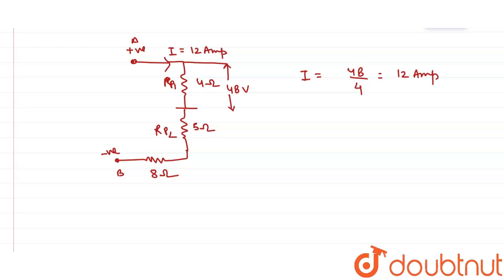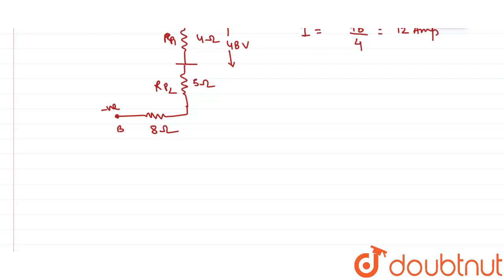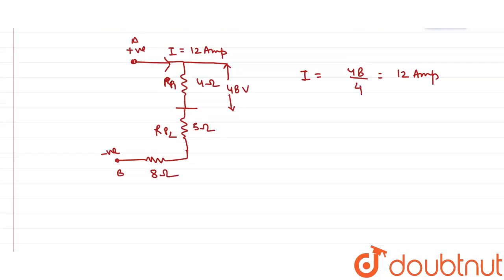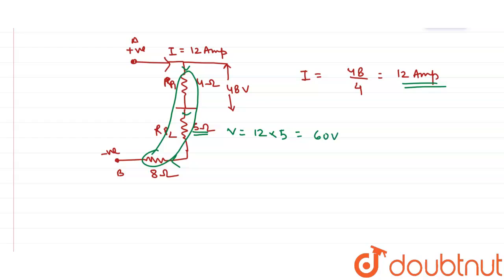In series, the current remains constant. These three — 4 ohm, 5 ohm and 8 ohm — are now in series, so the current in all of them is the same: 12 ampere. The voltage across Rp2 is V = IR = 12 × 5 = 60 volts. Similarly, the voltage across 8 ohm is 12 × 8 = 96 volts.